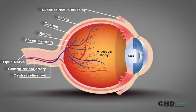The central retinal vein is a short vein that runs via the optic nerve and drains blood from the capillaries of the retina into the large veins outside the eye.